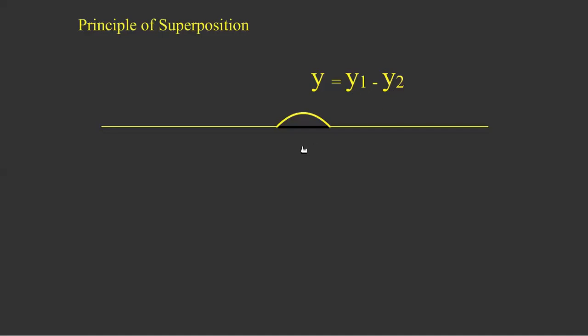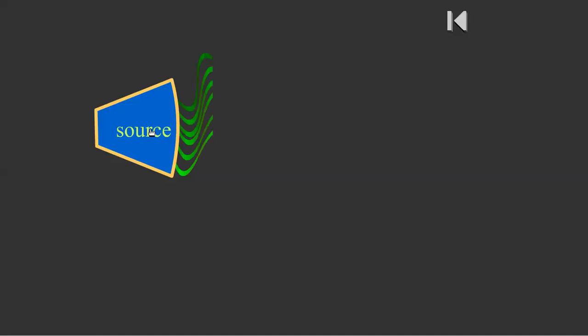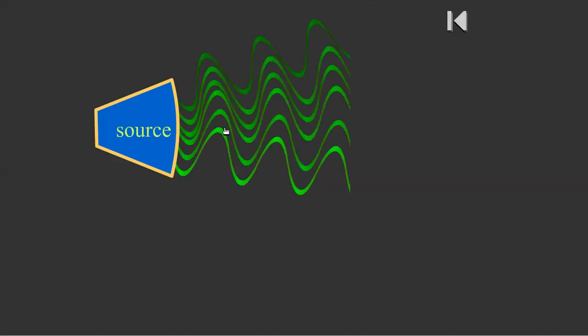Now let us discuss interference. This is the source of light. According to Huygens' wave theory, the source of light is a source of vibration of ether particles. Ether particles are hypothetical particles present everywhere in the universe. This source vibrates ether particles, just like sound waves vibrate air particles. We assume the source of light emits waves like this — these are the light waves.